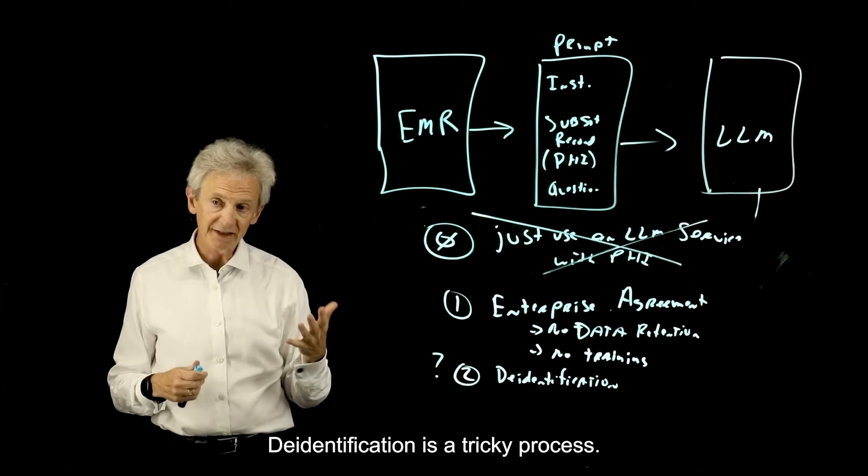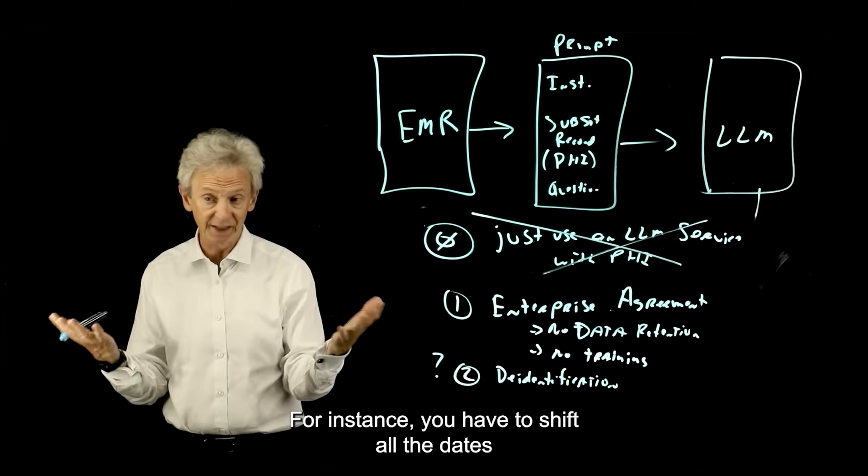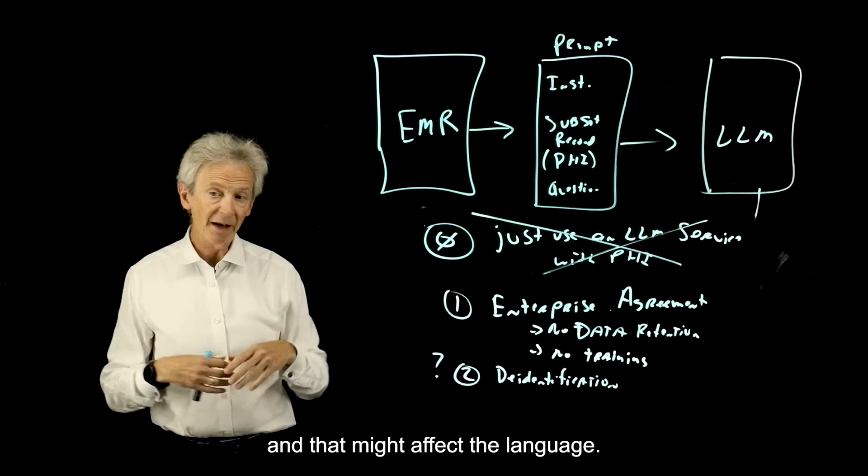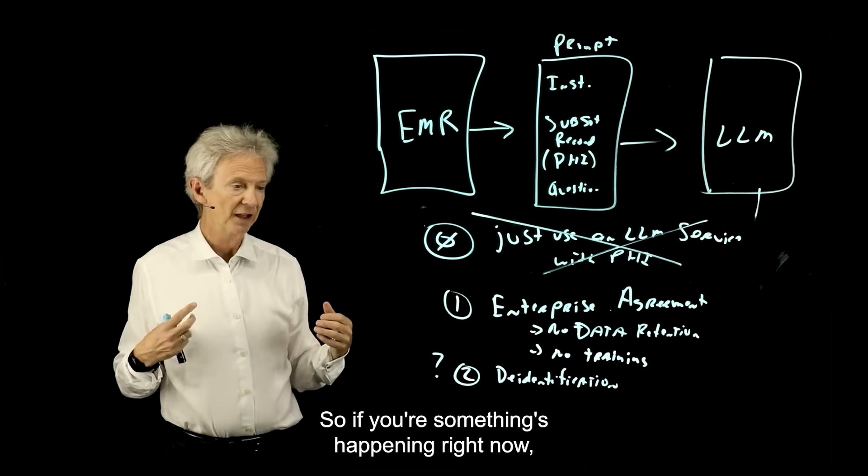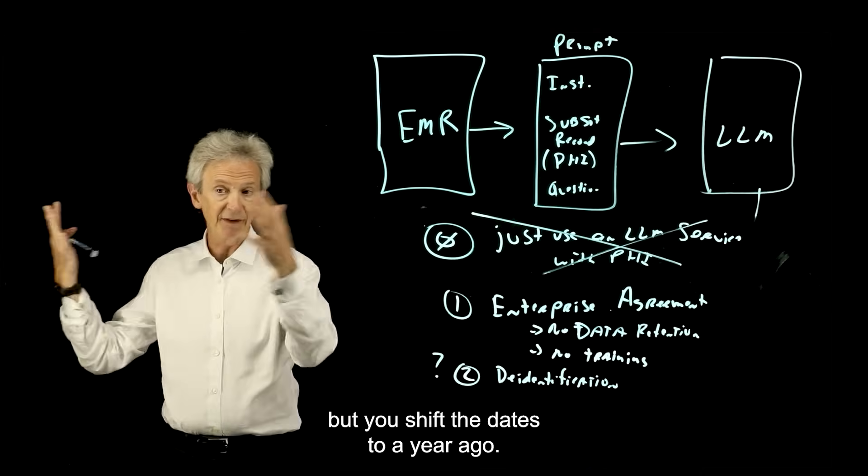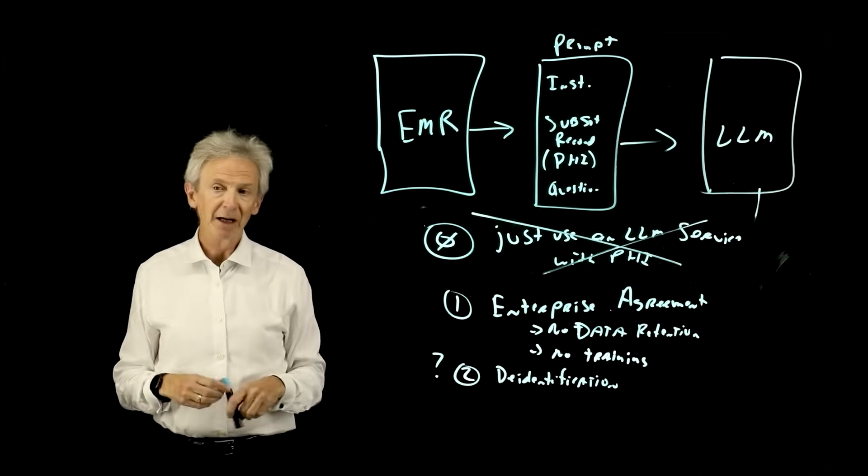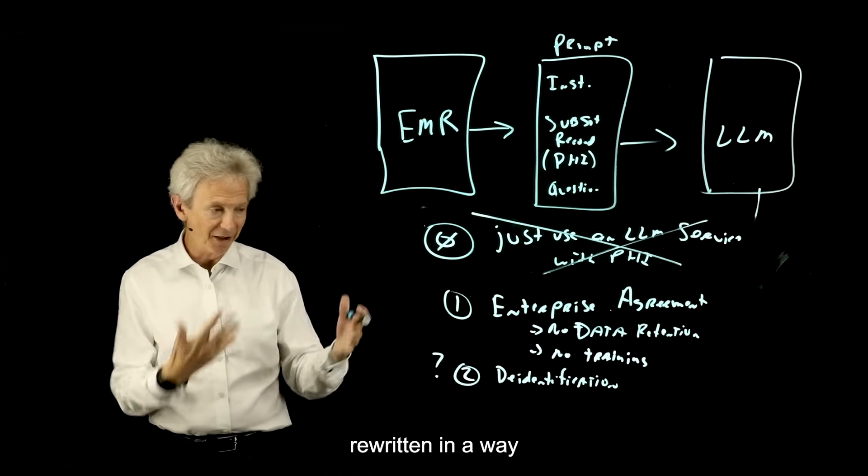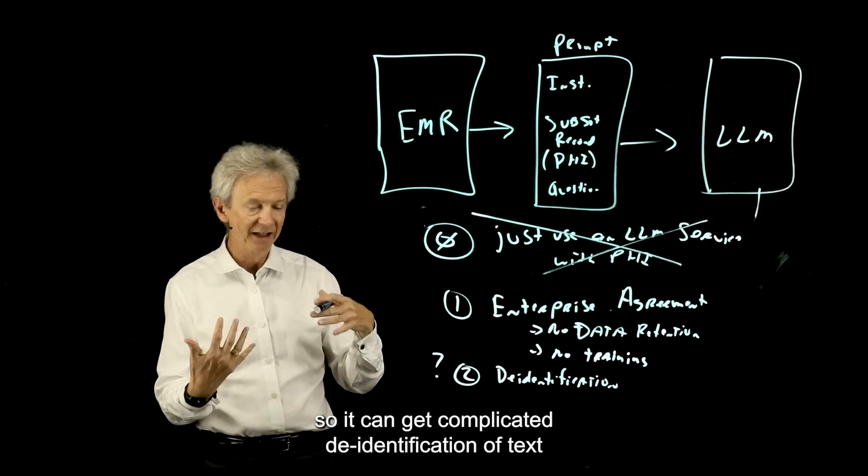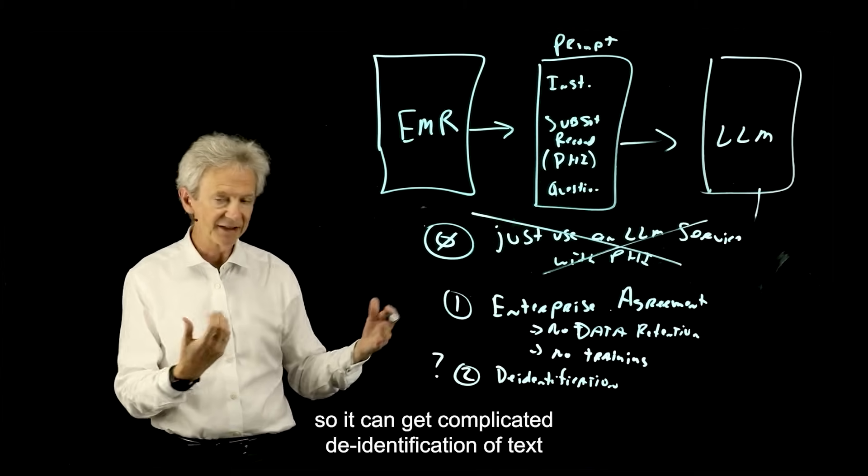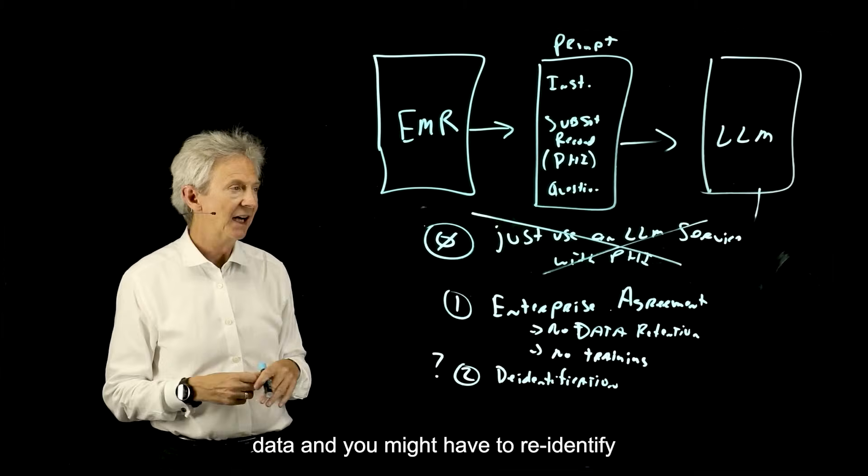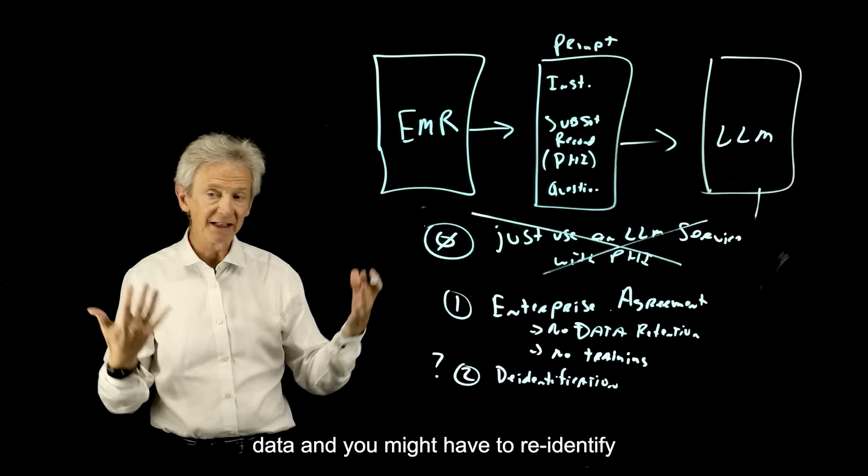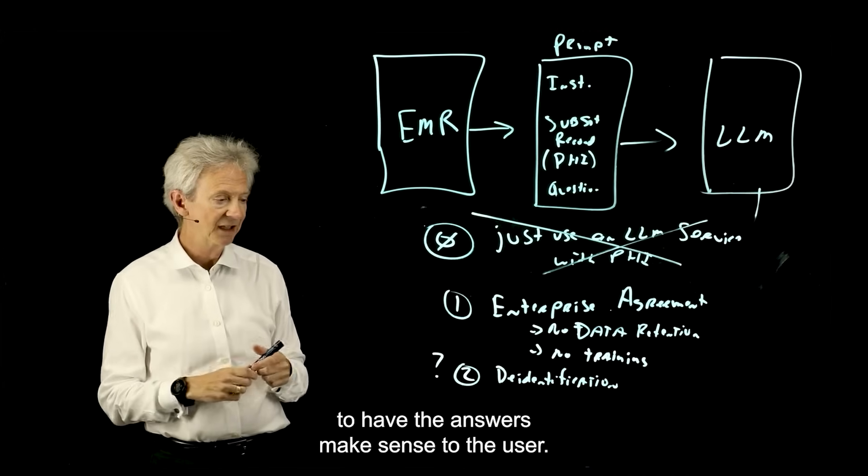De-identification is a tricky process. For instance, you have to shift all the dates, and that might affect the language. So if something's happening right now, but you shift the dates to a year ago, all the sentences that are in the present tense need to be rewritten in a way. So it can get complicated de-identification of text and discrete data.